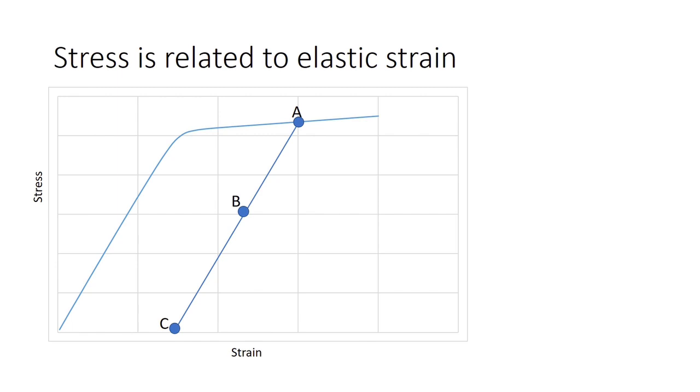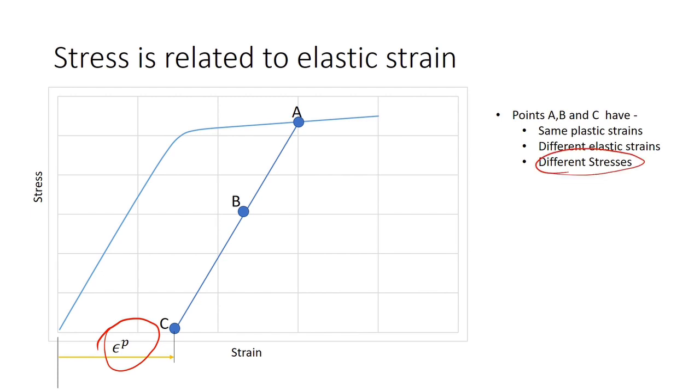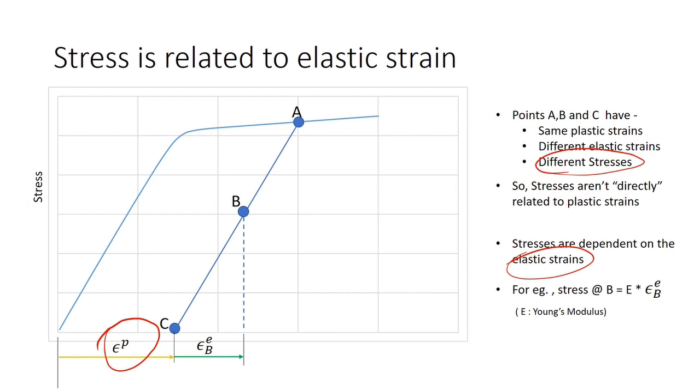Let's consider points A, B and C along the unloading path. If you decompose the strain, you will find that all the points A, B and C have the same amount of plastic strain as shown and from the figure, it can also be seen that all A, B, C have different stresses. Although the stresses change, the plastic strain remains constant. So the stresses aren't directly related to the plastic strains or in other words, the plastic strains do not induce any stress. The stresses are related to elastic strains. For example, the stress at B is equal to the Young's modulus times the elastic strain at B.